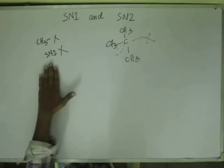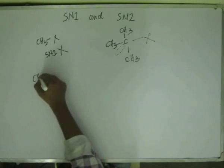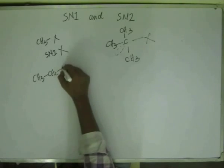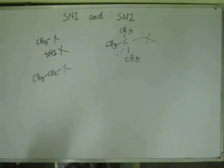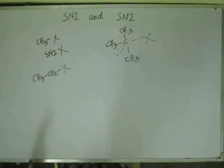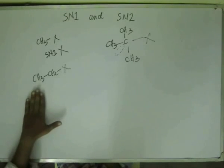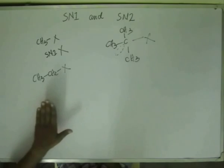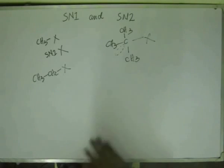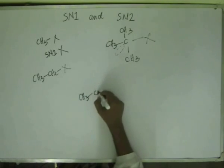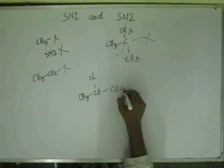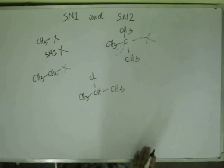So in 0° and 1° alkyl halides, we will have only SN2. A 1° carbocation is very unstable at room temperature and is not generally formed unless we heat the system. In the case of a 3° alkyl halide, we will have only SN1. When it comes to 2° alkyl halides, that's where the problem arises — you will have to think about whether it will be SN1 or SN2.